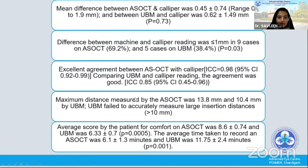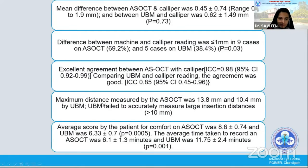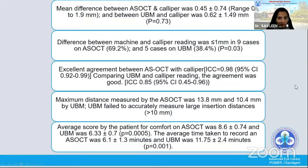The maximum distance that we could measure on the ASOCT was 14 mm and 10.4 mm on the UBM. Also, in patients who had undergone previous large recessions, we could not localize the muscle by the UBM. The patients scored the ASOCT better compared to the UBM, and the time taken to record the non-contact ASOCT was much less than the UBM.